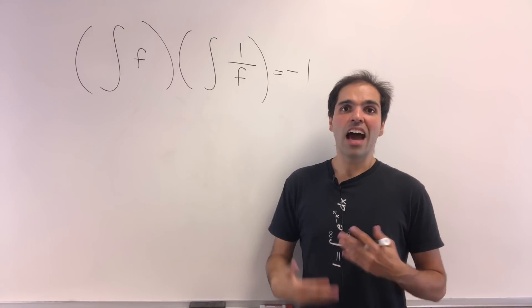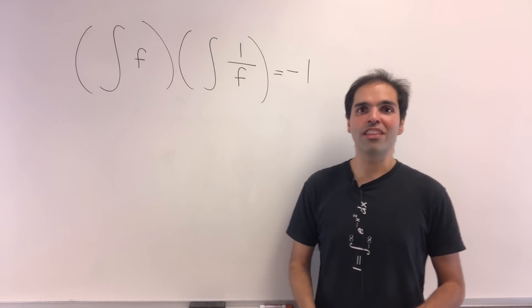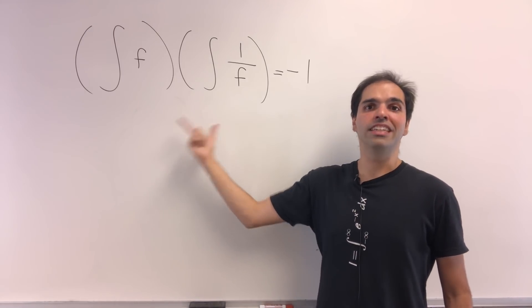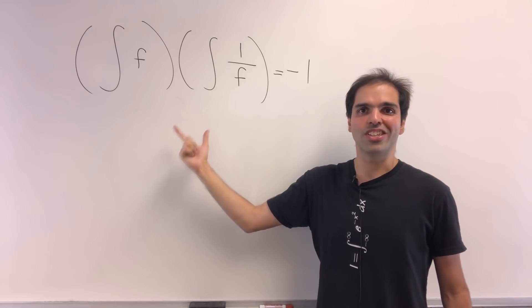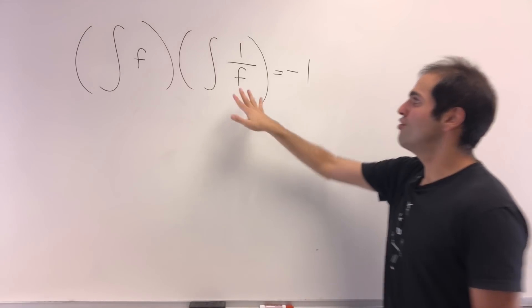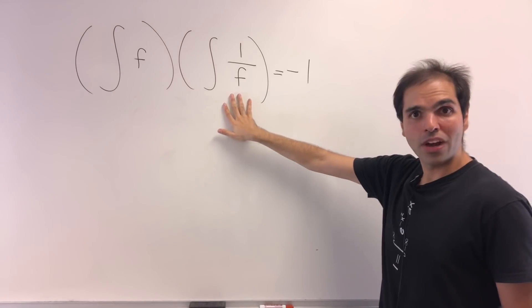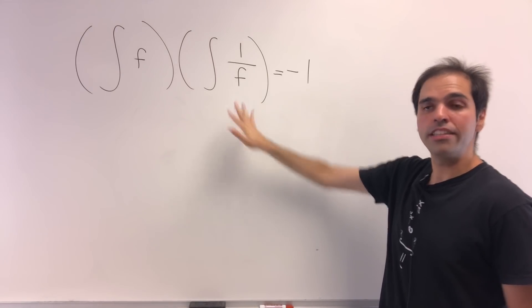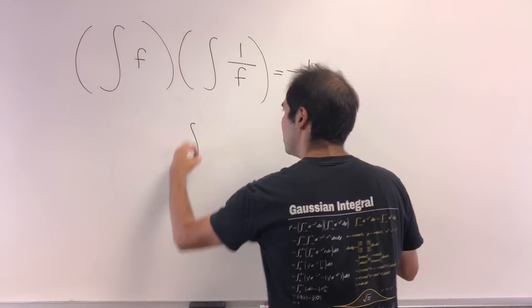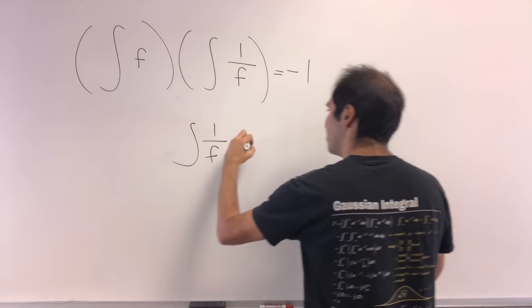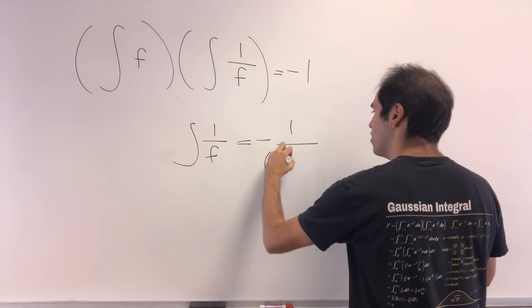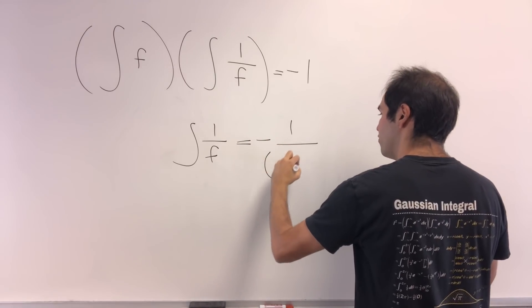All right, that said, how do we solve this? Here's the trick: let's try to convert an integral equation into a differential equation. First, let's solve for the hard part — the integral of 1 over f — to get: integral of 1 over f equals minus 1 over the integral of f.